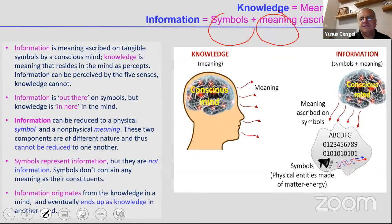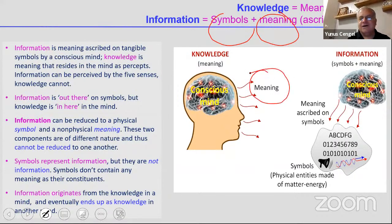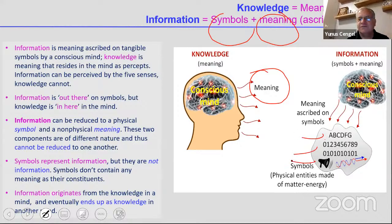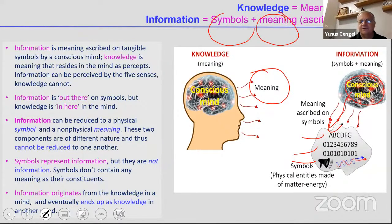Knowledge is meaning in the mind, and information is symbols plus meaning, as ascribed by the mind. In a conscious mind we have meaning, but outsiders cannot see it. Information involves physical entities — letters, sounds — and when a conscious mind perceives those symbols, it perceives information.